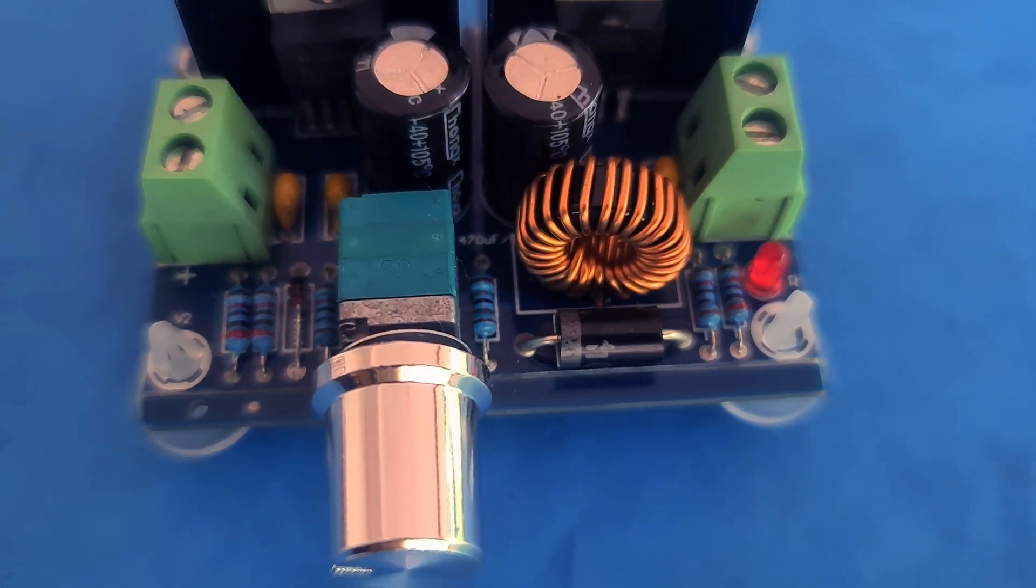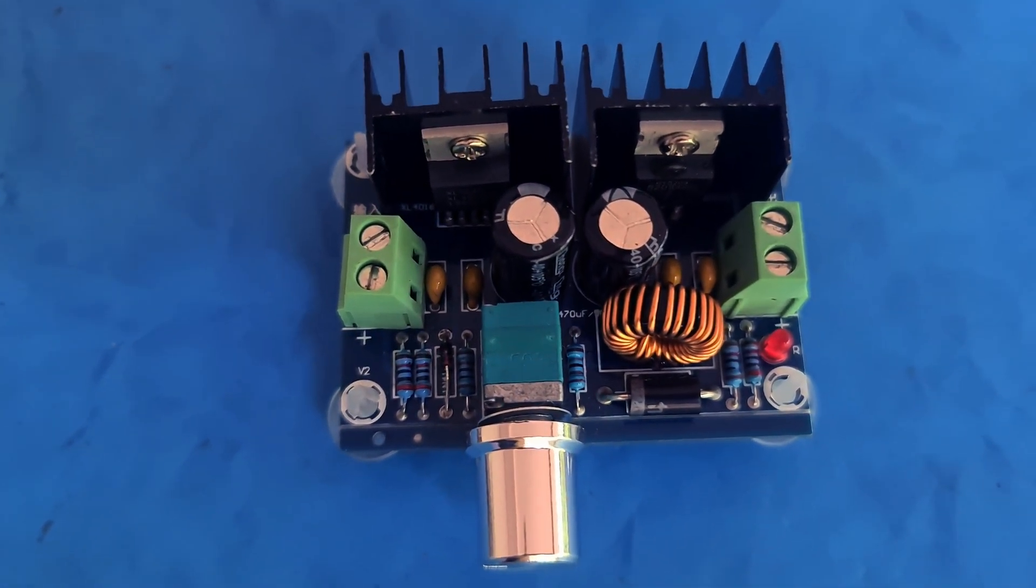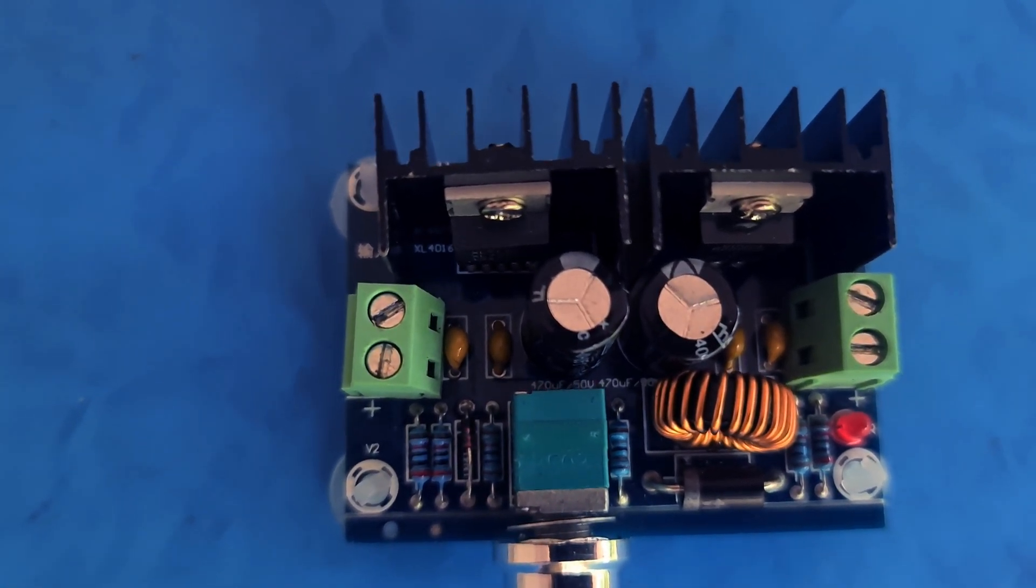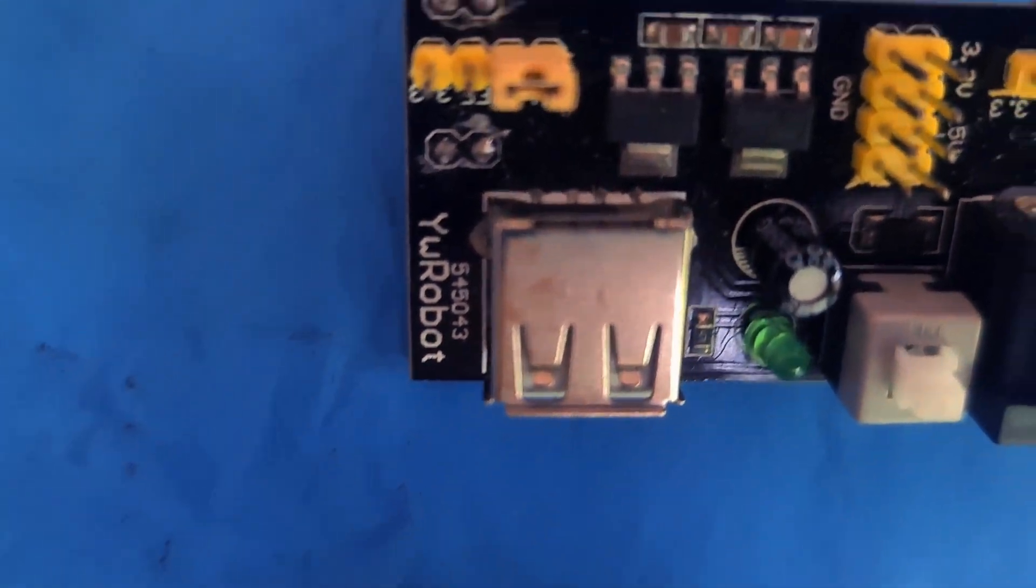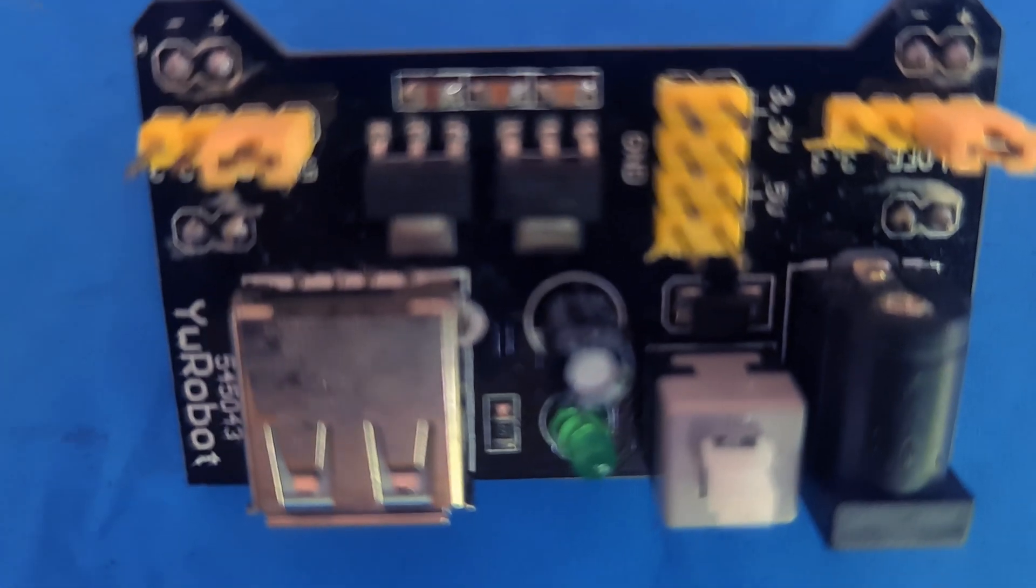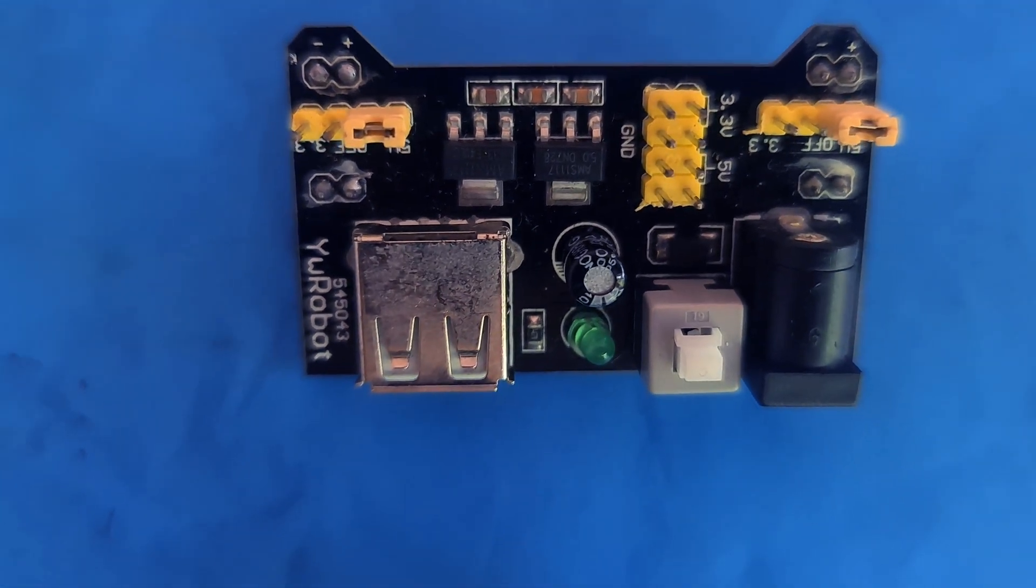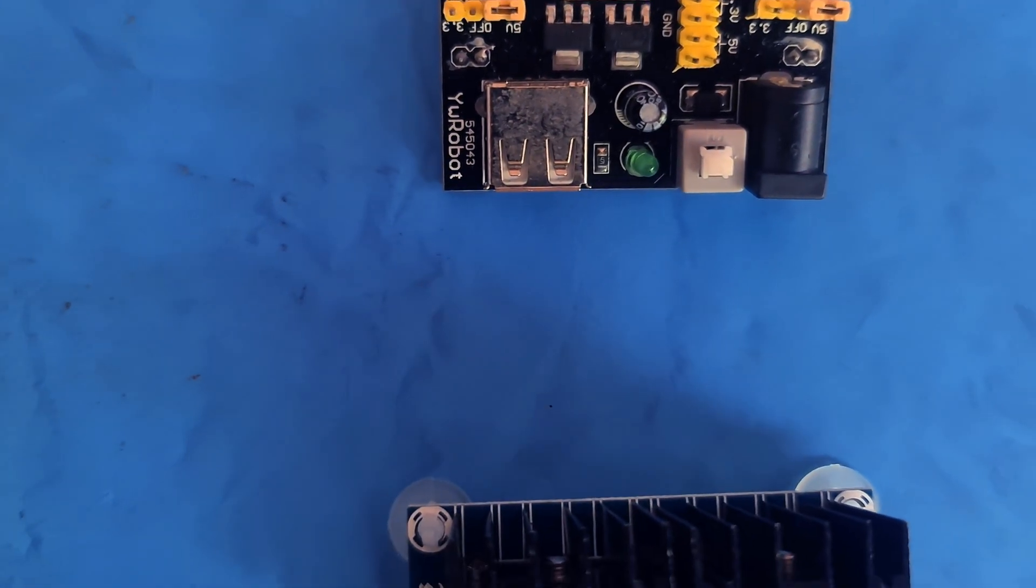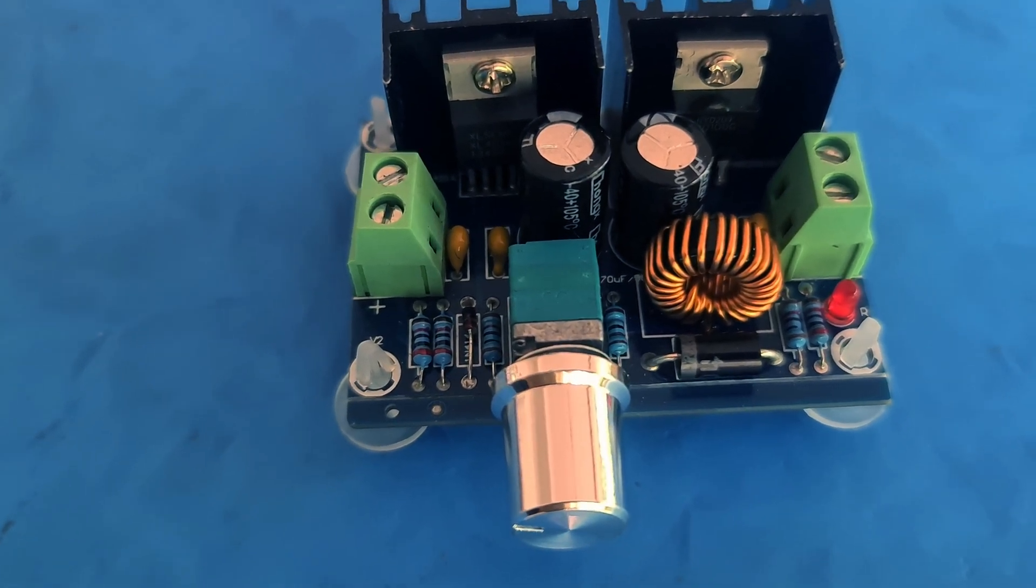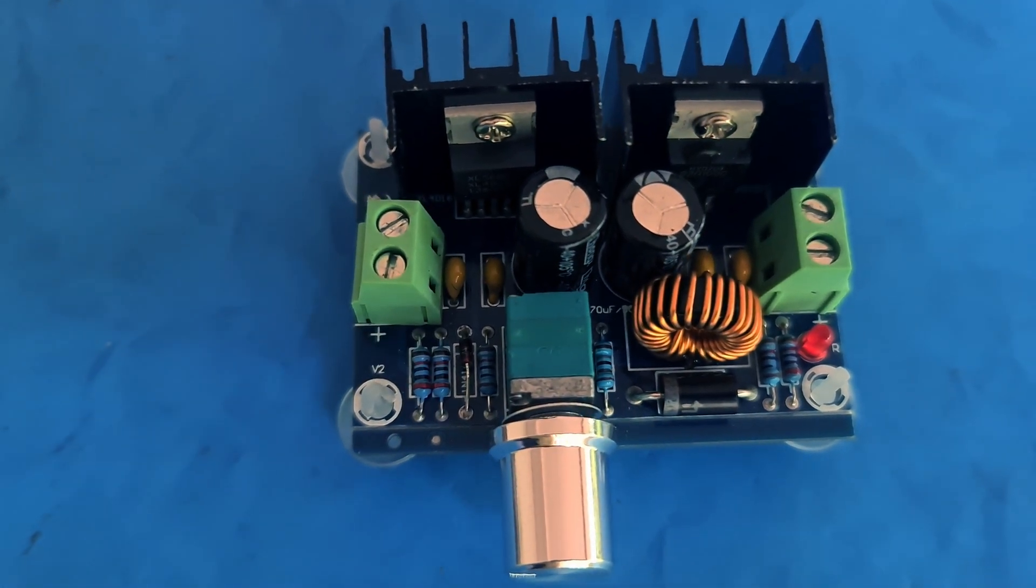I've got two exciting devices to share with you. The XL4016 PWM adjustable 4 to 36 volts to 1.25 to 36 volts, 8 amps, 200 watts, DC-DC step-down buck module. And the YW-Robot 3.3 and 5 volts dual-output breadboard power supply.